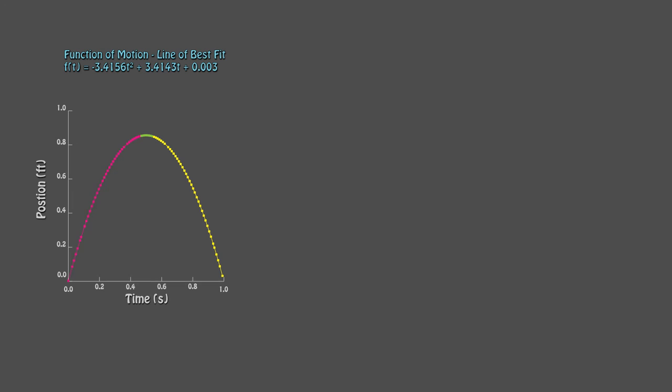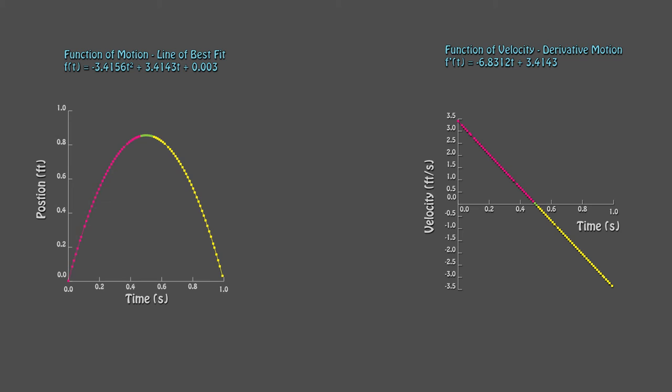Using the power rule, we can take the derivative of the function of motion. The derivative is the instantaneous velocity of the ball. As we learned, instantaneous velocity is also equal to the slope of the tangent line drawn on the function of motion. Changes in tangent lines give us general information about the velocity of the ball.